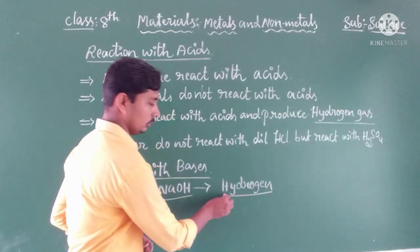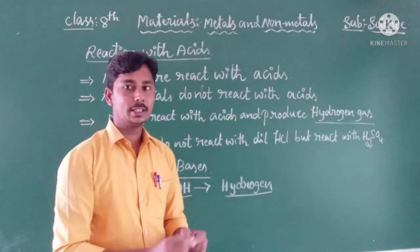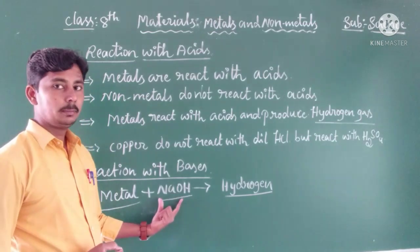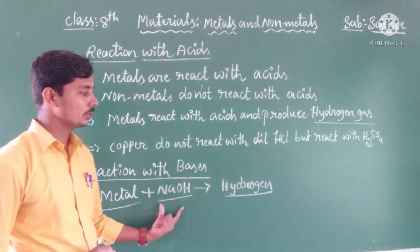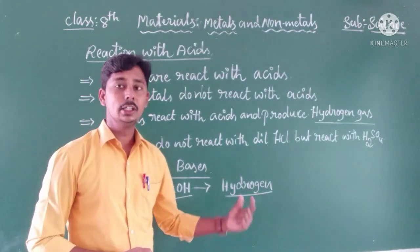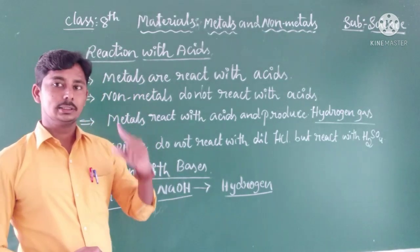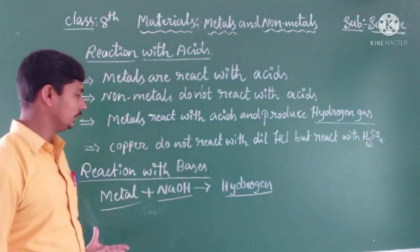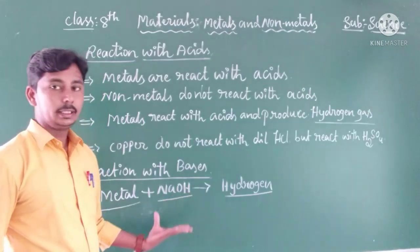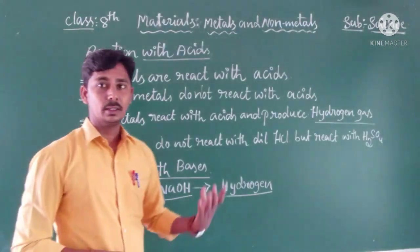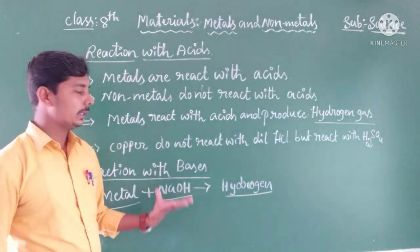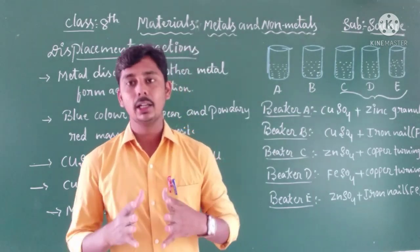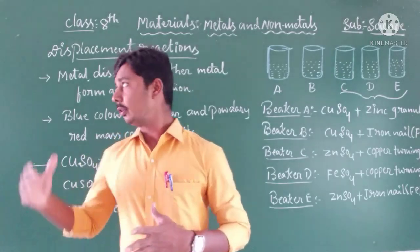Copper is one metal that does not react with dilute hydrochloric acid. Most metals react with acids, but copper does not react with dilute hydrochloric acid. However, copper does react with sulfuric acid. So sometimes certain metals do not react with particular acids — almost all metals easily react with acids, but copper is an exception with dilute HCl.